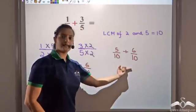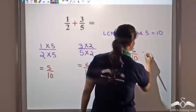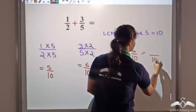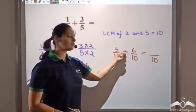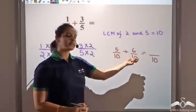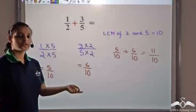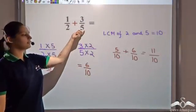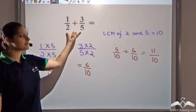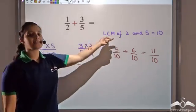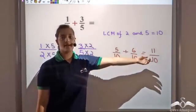Now the denominators are the same, and I just add the numerators: 5 plus 6 gives 11. So the answer is 11/10. One way to add rational numbers with different denominators is to take the LCM, make the denominators the same, and then add.